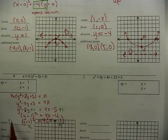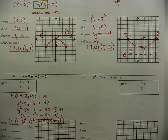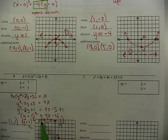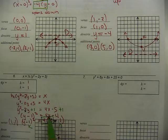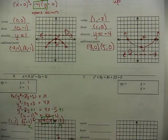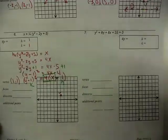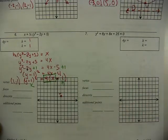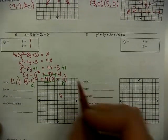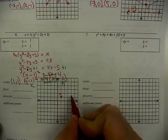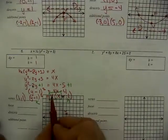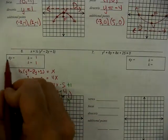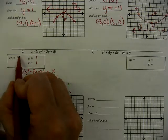We have the k inside the grouping symbols but not the h, so divide out the common factor of four. We get (y − 1)² = 4(x − 1). Now h is positive one and k is positive one — change the signs — so the vertex is at (1, 1). Which way does it open? The positive four is paired with x, and positive x is on the right-hand side of the graph, so it opens to the right. The focus is to the right of the vertex.